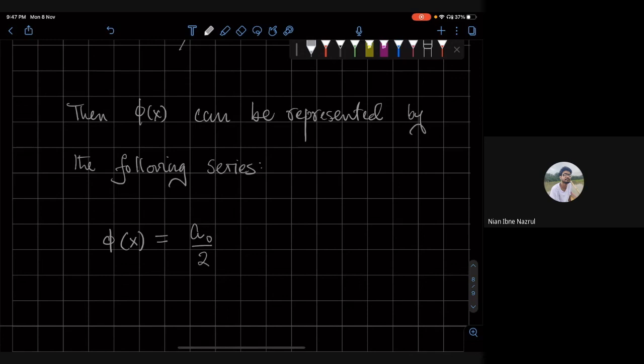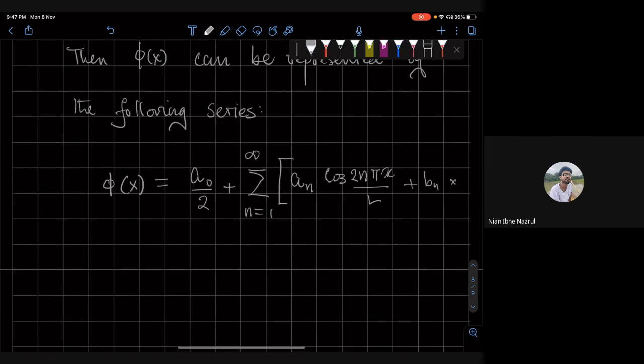So it's a periodic function which is kind of nice. It'll have a part which is constant, and then there will be an infinite number of terms in principle, and these infinite number of terms will be cosine and sine functions. A sub n cosine 2n pi x over L plus B sub n times sine 2n pi x over L.